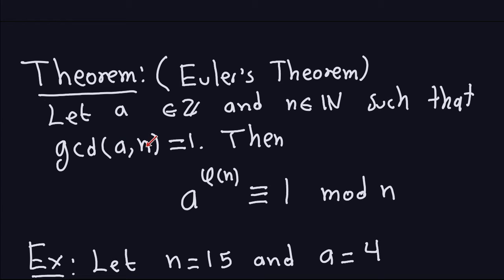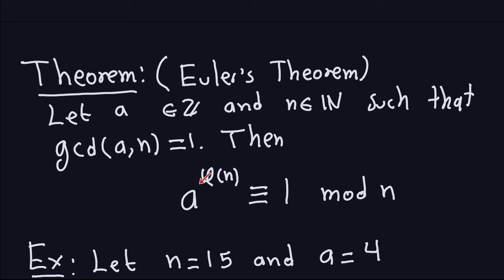Euler's theorem says that if I take a to the power of phi of n — where phi of n is the count of numbers relatively prime to n between 0 and n minus 1 — that's going to be congruent to 1 modulo n. So if you take a to this power and divide by n, the remainder will be 1. That's basically what the property is saying.